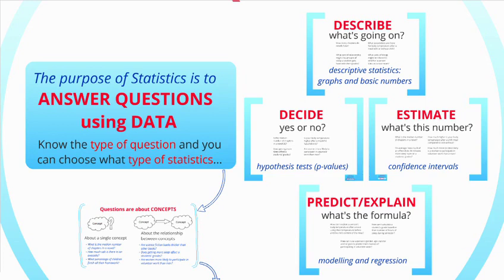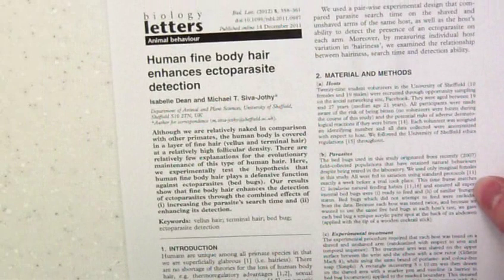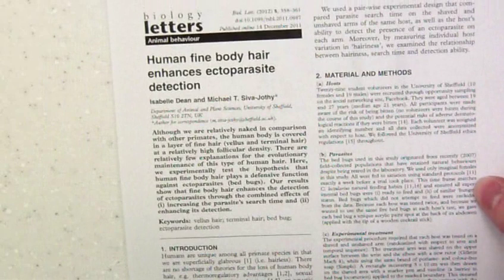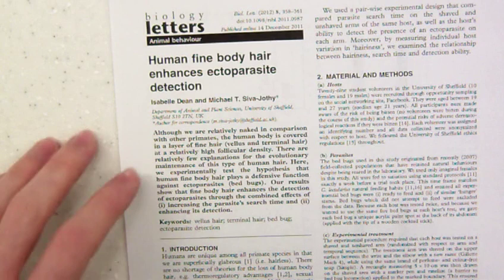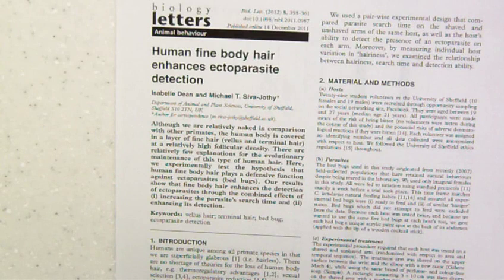I still have seventeen minutes, so I'm going to talk about interpreting some of this information from a published paper. The title of this paper is 'Human fine body hair enhances ectoparasite detection.' Has anyone discovered what this is about? Bed bugs — well done. It's basically about the thickness of our hair helping to prevent being bitten by bed bugs.